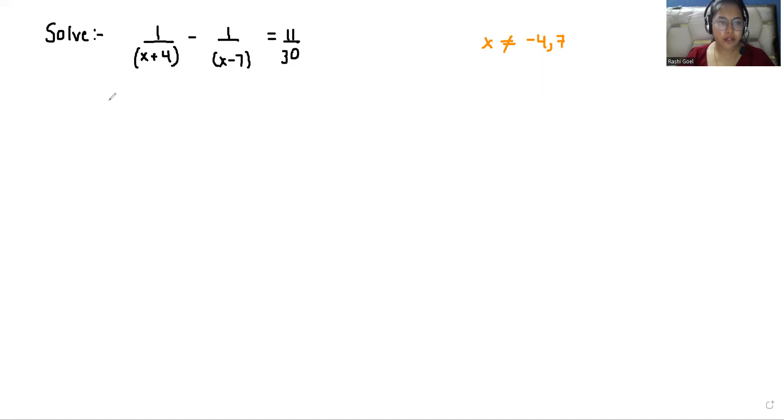So we have 1 over (x+4) minus 1 over (x-7) equals 11 by 30. So I'll take the LCM. So (x+4) and (x-7).